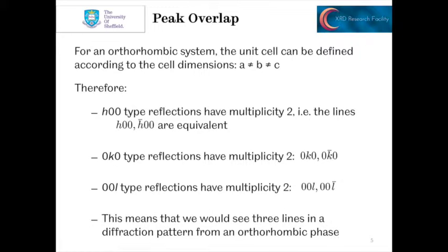For an orthorhombic system it gets more complex again. We now have A, B, and C lattice parameters that are all different, so the H00, 0K0, and 00L type reflections all have a multiplicity of 2. That means if we look at the diffraction pattern from an orthorhombic phase, we would see three peaks instead of one: an H00, a 0K0, and a 00L line in our diffraction pattern.